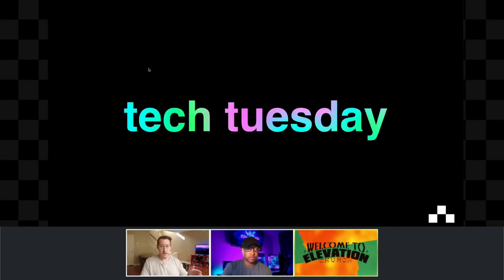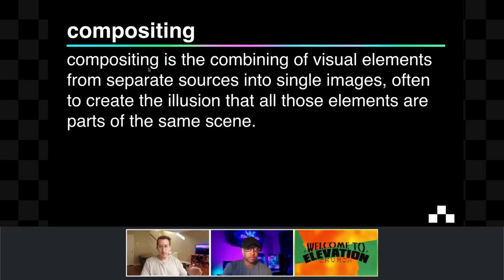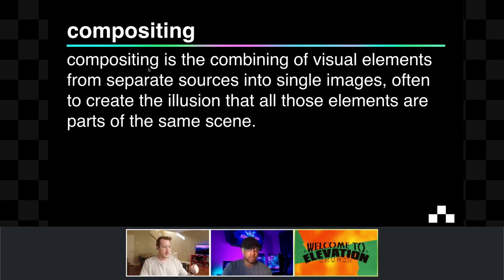Here's the concept we're talking about — the idea of compositing. Compositing is the combining of visual elements from separate sources into single images, often to create the illusion that all those elements are parts of the same scene.